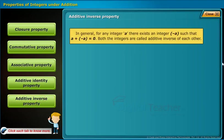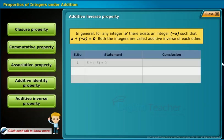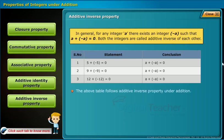Additive inverse property defines that for any integer A, A plus (minus A) equals 0. Both integers are called additive inverses of each other. For example: 5 plus minus 5 equals 0. The same holds for the second and third statements. Therefore, the table follows additive inverse property under addition.